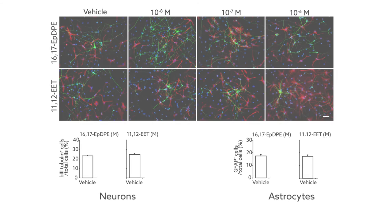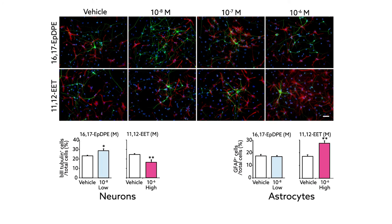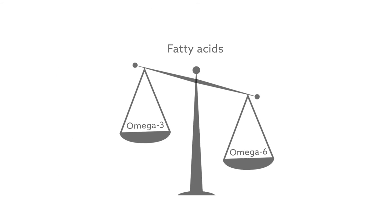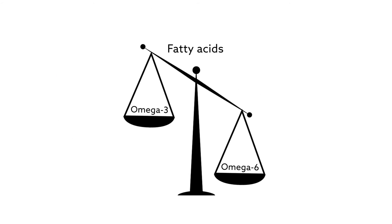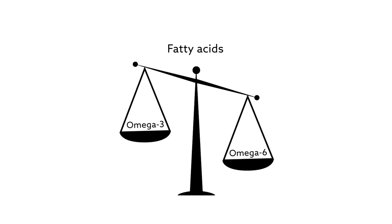Treating NSCs from the mouse pups with high or low concentrations of those two epoxy metabolites could also increase or decrease the number of neurons and glia produced. Taken together, these findings indicate that an imbalanced maternal fatty acid intake impairs neurodevelopment by changing the levels of epoxy metabolites.